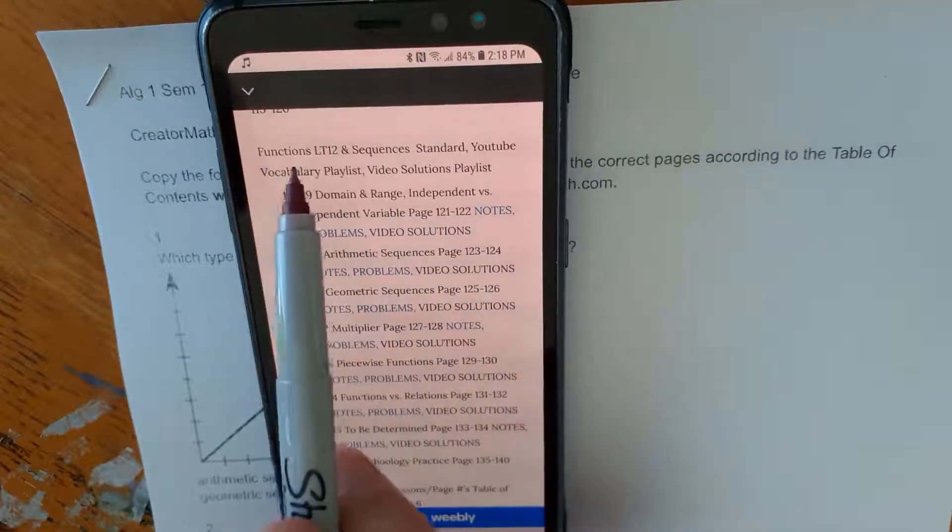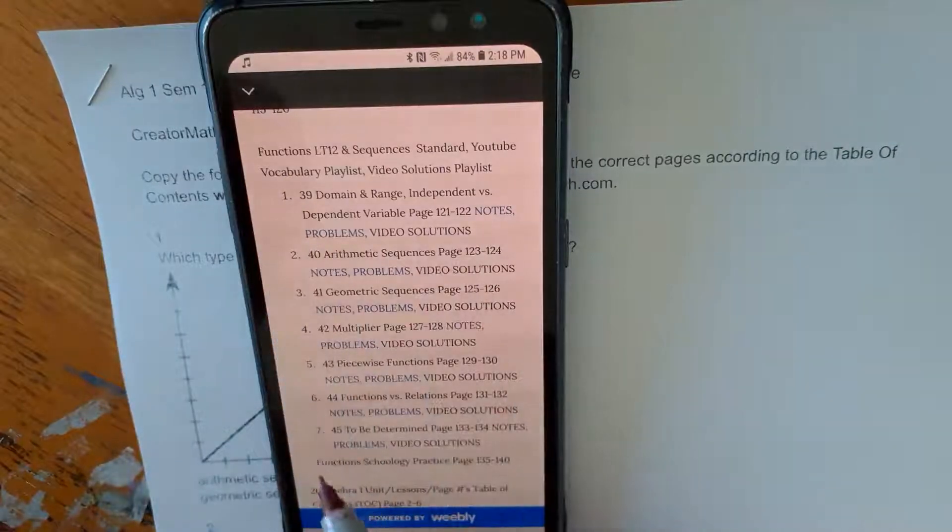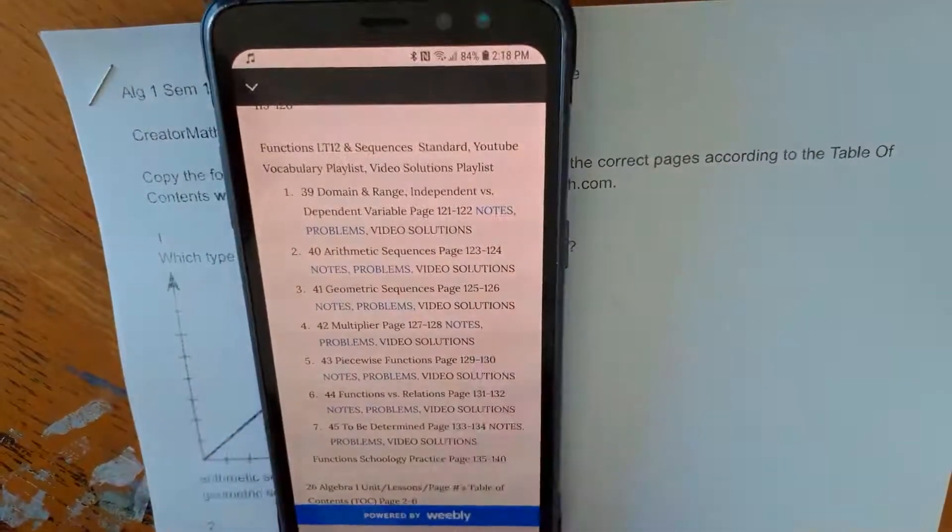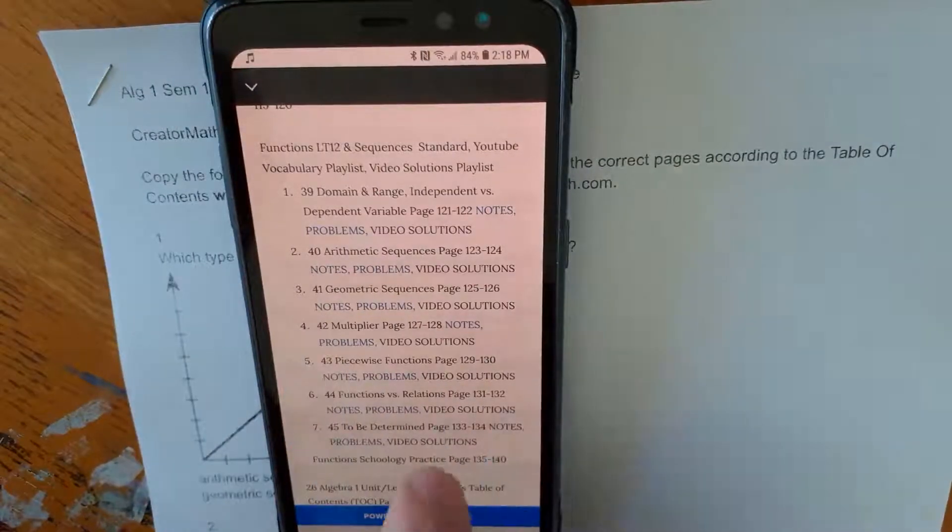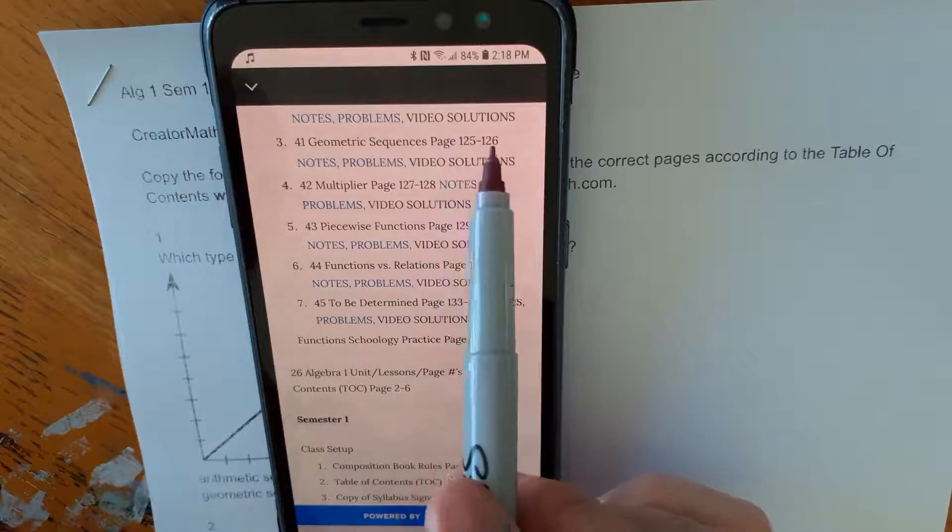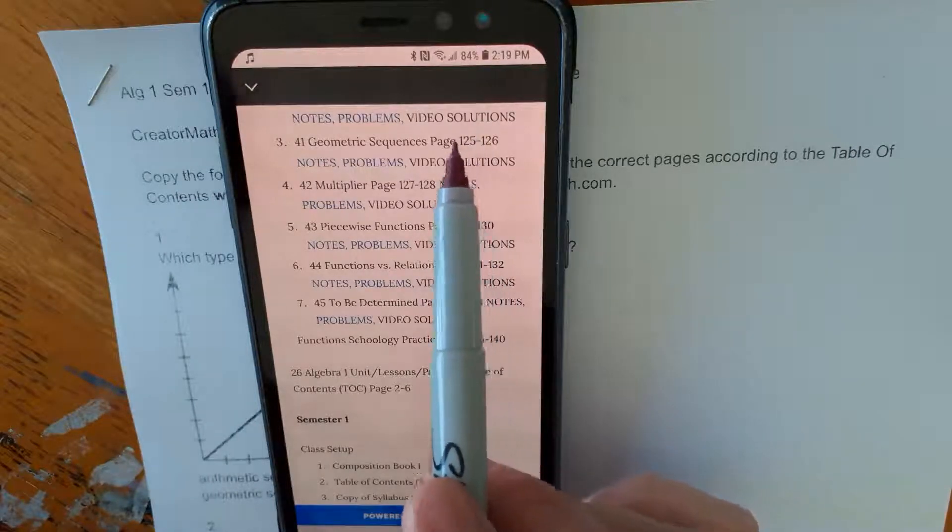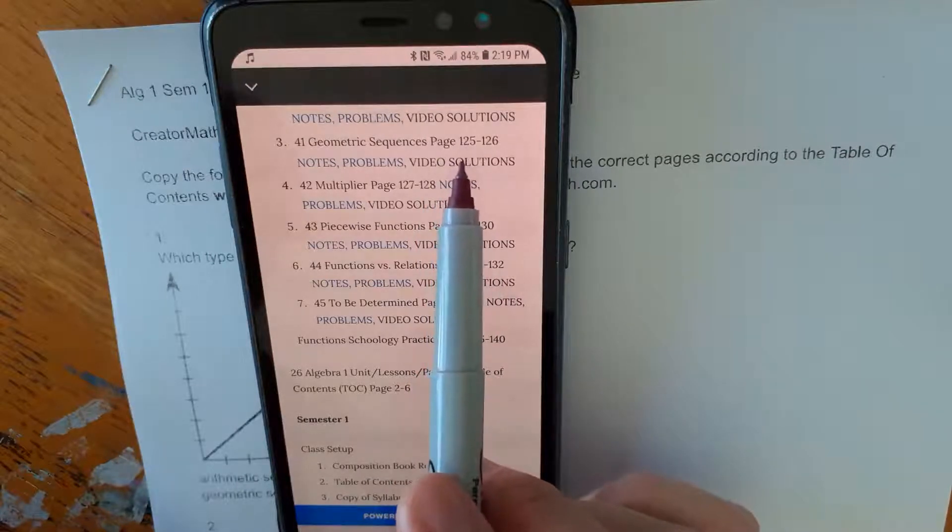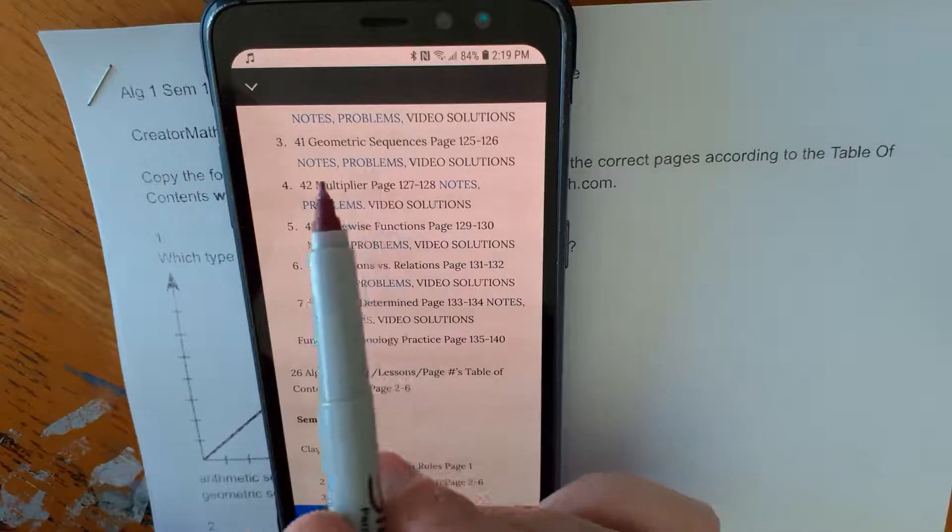In this case, this one is functions. Then we see the lessons right here. There's seven lessons in this unit and we're looking at number three right now. So this is the third one, geometric sequences. Here are the page numbers on which the notes go. Please don't take this video's word for it, but go back and find the original table of contents at the time you're viewing this. These page numbers probably will have changed.